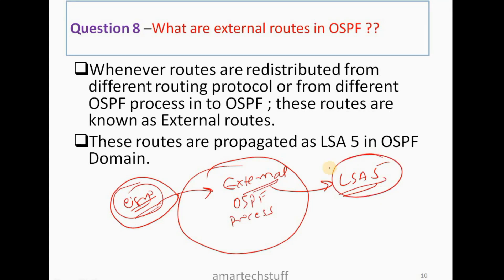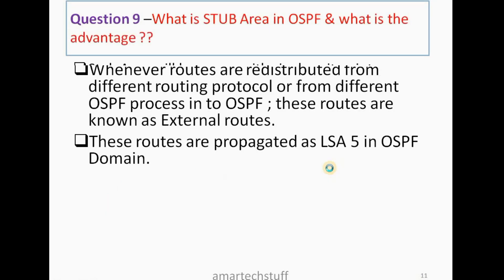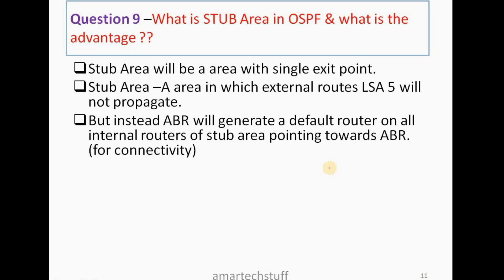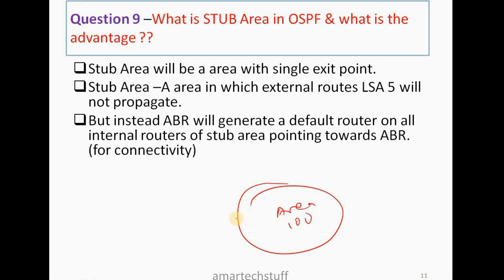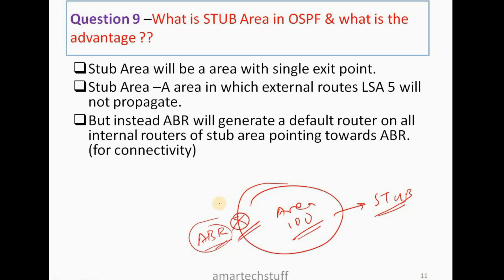Question number 9: What is the stub area in OSPF and what is its advantage? A stub area is an area in which LSA 5 will not propagate. LSA 5 are the external routes. For example, consider Area 100 which has only one exit point — it is only connected to another area via one ABR. If an area has only one exit point, that area should be made stub. Once you make it a stub area, external LSAs (LSA 5) will not propagate into that area.